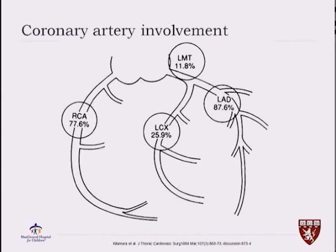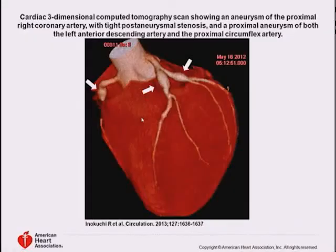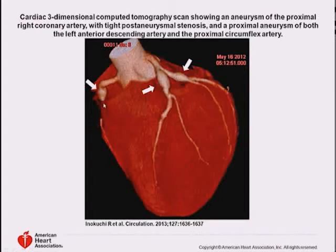The body attempts to repair those endothelial cells by replacing them with fibroblasts, causing progressive fibrosis and scar formation. There is also active remodeling in the endothelium causing intimal proliferation and formation of new vessels, resulting in stenosis of the coronary artery. The coronary artery involvement is mostly at the left anterior descending; the second common site is the right coronary artery, then the left circumflex and left main. This angio CT scan of a patient with Kawasaki disease shows the right coronary artery with an aneurysm at the proximal right coronary artery and near obliteration distally. There are aneurysms also involving the left anterior descending and the proximal left circumflex artery.